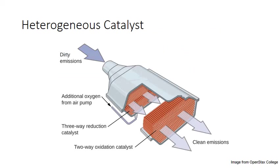Another example of a heterogeneous catalyst is the catalytic converter in your car. The catalytic converter contains solids like platinum and palladium on a high surface area ceramic substrate, and these catalysts help speed up reactions between harmful incomplete combustion products in the exhaust, like nitrogen oxides, converting them into less harmful substances like nitrogen and water vapor — so we go from dirty emissions to cleaner emissions.